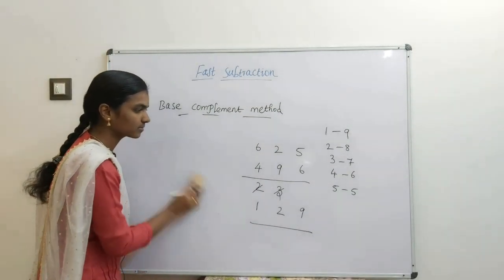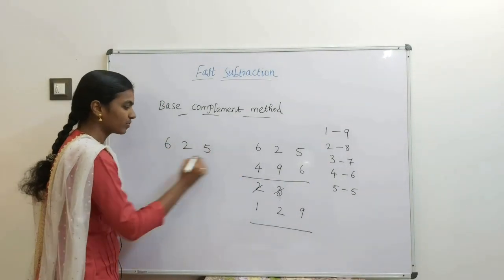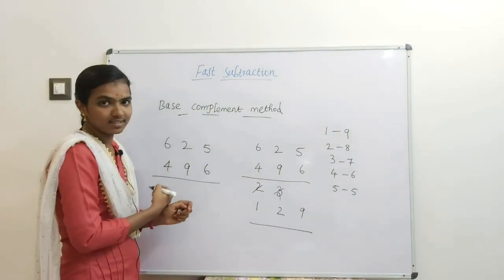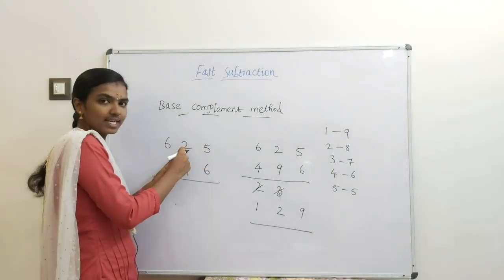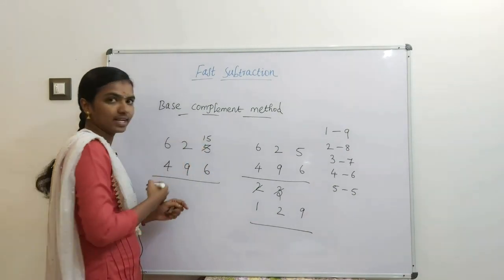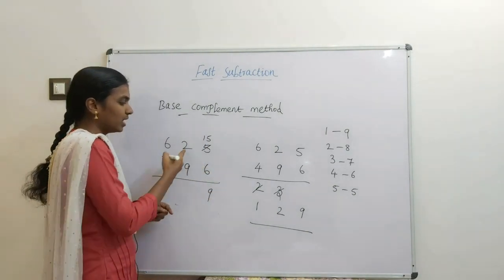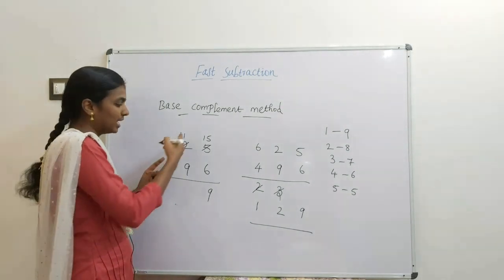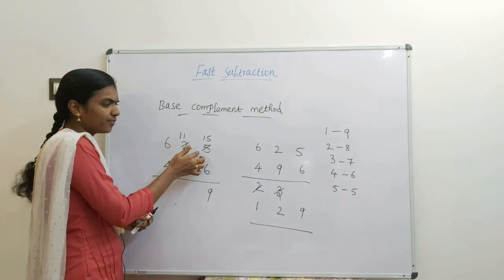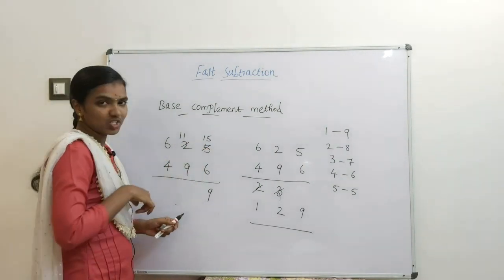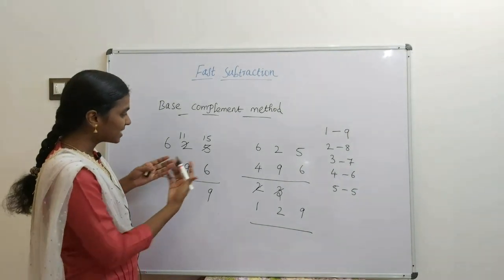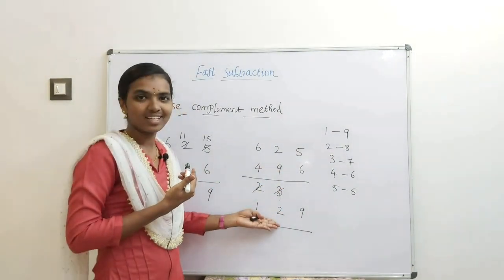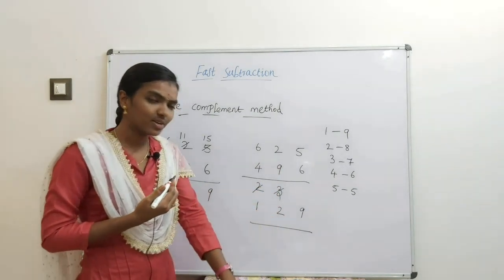Now let's compare with the normal borrowing method for 625 minus 496. First, 5 minus 6 — can't subtract, so borrow: 15 minus 6 is 9. Then 1 minus 9 — can't subtract, borrow again: 11 minus 9 is 2. This borrowing is very confusing, takes more time, and disturbs the original question. With the complement method, we get the answer neatly without disturbing anything.